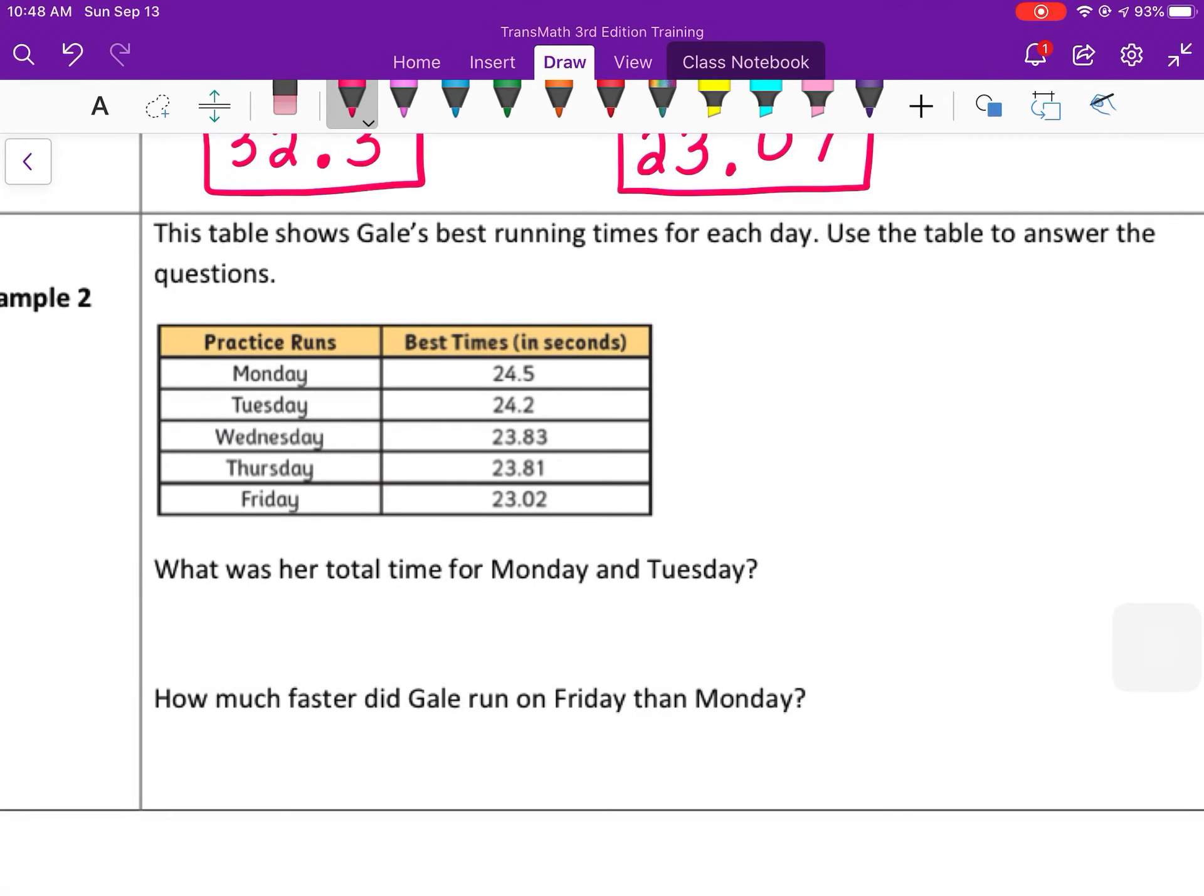This table shows Gail's best running times for each day. Use the table to answer the questions. What was her total time for Monday and Tuesday? When I'm asking for a total, total means that you add the times. I'm asking for the total for Monday and Tuesday. So that was 24.5 seconds and 24.2 seconds. So lining up the decimals, 24.2. I can add those to find the total for the two days. So 5 plus 2 is 7. 4 plus 4 is 8. 2 plus 2 is 4. Bring down the decimal and the total time was 48.7 seconds.